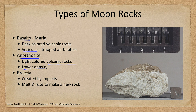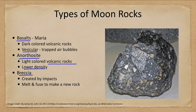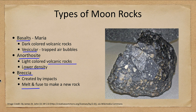Both basalt and anorthosite are volcanic rocks. We do not see sedimentary rocks on the moon as we do on Earth — only volcanic rocks and breccias. Breccias are created on the moon by impacts: the material is melted and fused together to make a new rock. A breccia is essentially a metamorphic type rock, changed by the heat and pressure of a massive impact smashing into the moon.